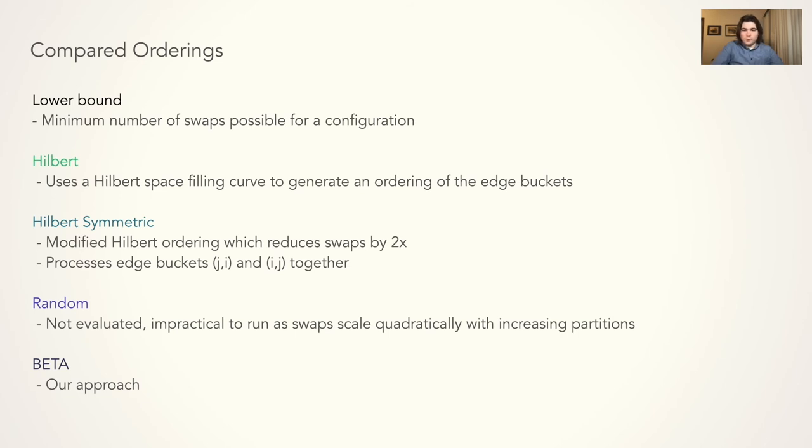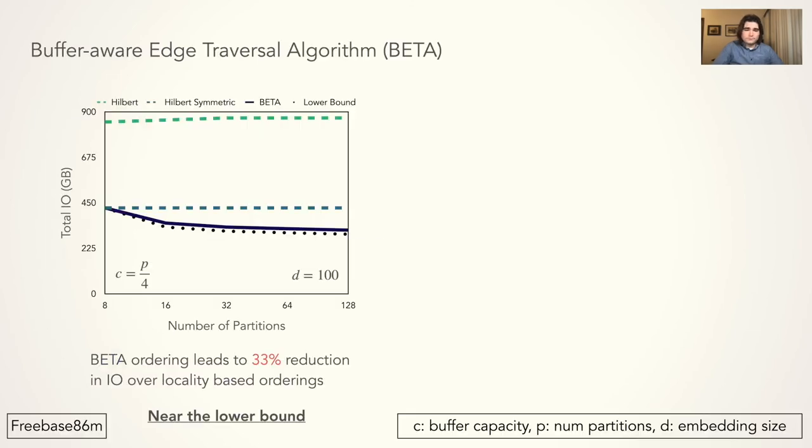And then Hilbert symmetric, which modifies the Hilbert ordering to reduce the number of swaps by 2x. It does this by processing edge buckets which operate on the same partitions together. We do not evaluate the random ordering as it is infeasible to run, requiring far too many swaps. Here, we compare the total I/O performed during a single epoch of training on Freebase 86M. On the x-axis, we vary the number of partitions and scale the partition buffer to always hold one-fourth of the partitions in memory.